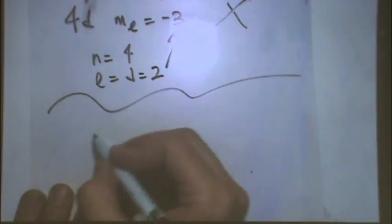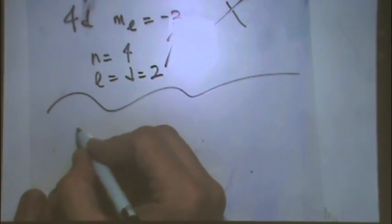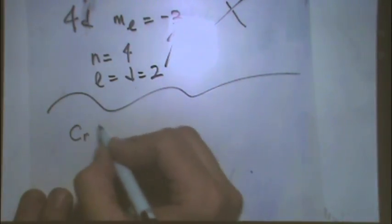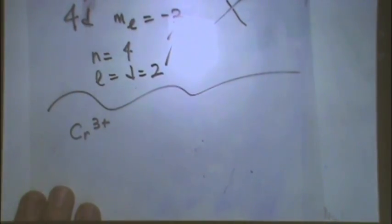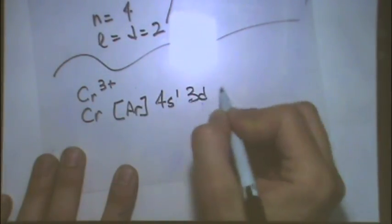Let's do another kind of question. Let's take chromium 3 plus. First let's write the noble gas configuration of chromium. That is, the previous noble gas is argon. And then neutral chromium is what?